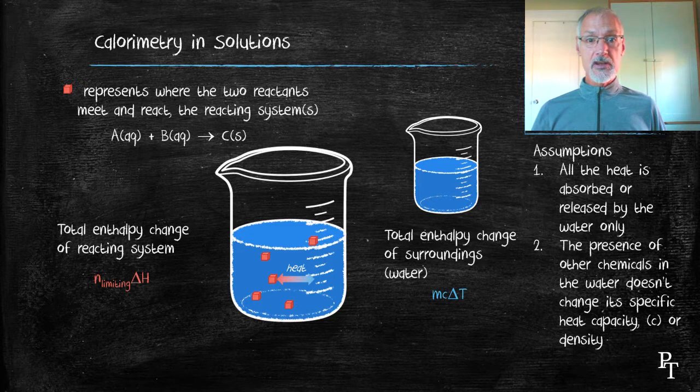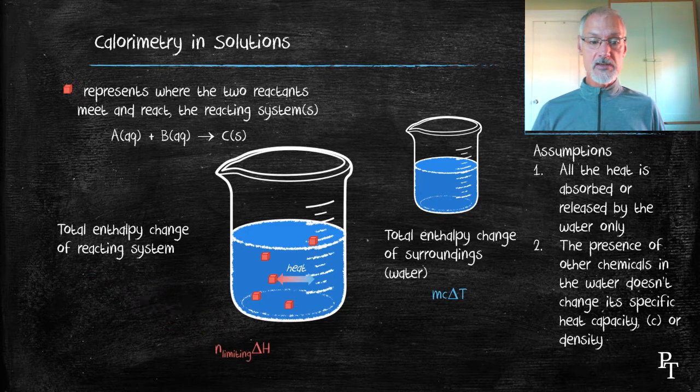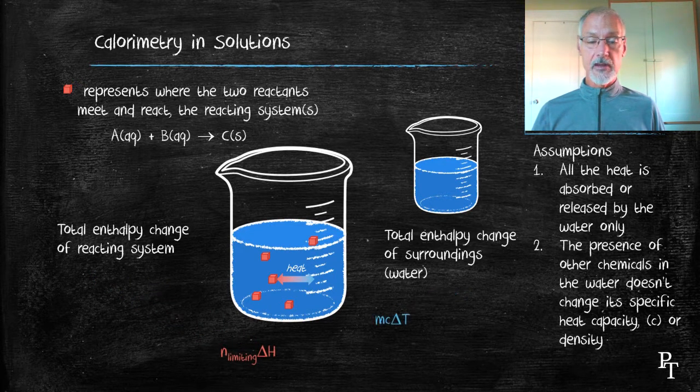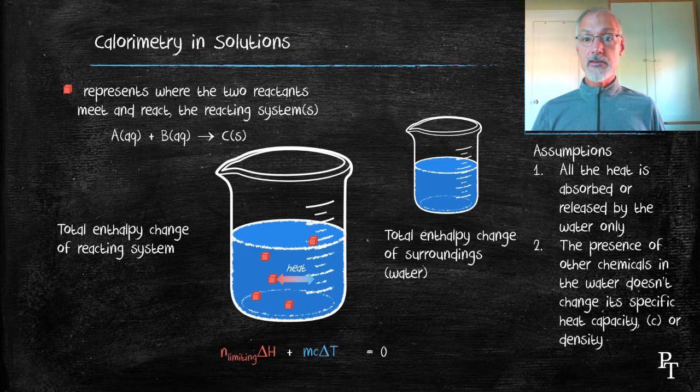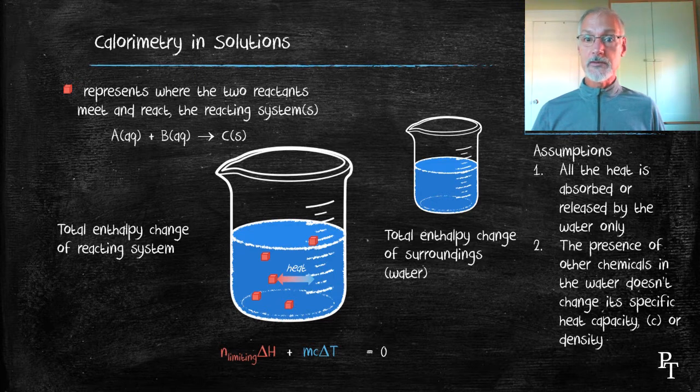So the change then associated with my system, the change associated with the surroundings, must total zero. That's the conservation of energy. If the amount of energy in the universe remains constant, then the total amount of changes must be equal to zero.